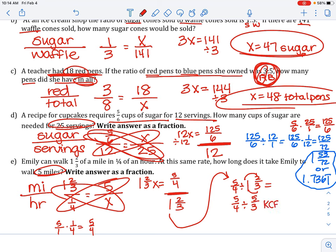Now, we're going to keep change flip. 5 over 4 times 3 over 5 is 15 over 20, or 3 fourths, or 0.75. Any of those answers is acceptable. And we're talking about hours, 0.75 hours.